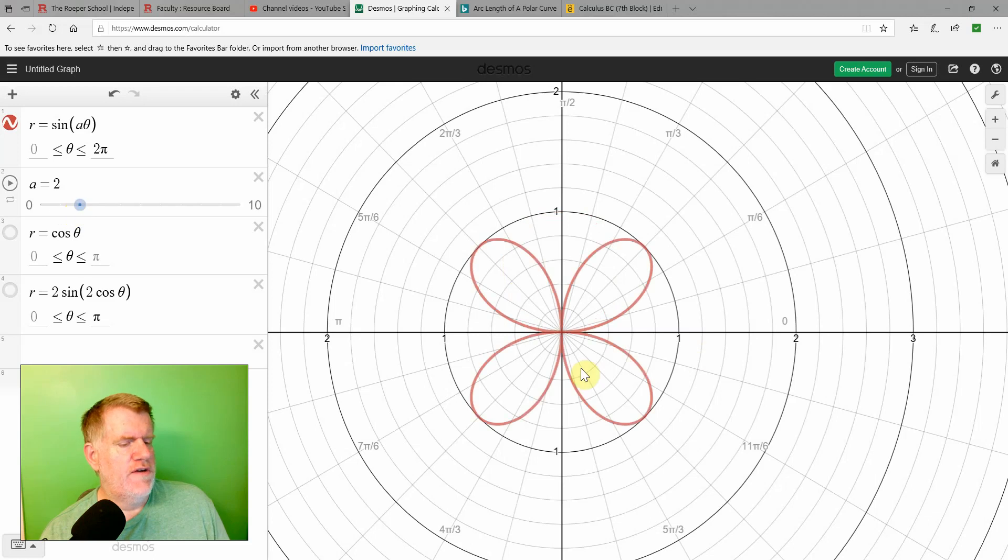When a is two, we've got four petals. It goes out to one and comes back to zero. There are four times between zero and two pi that the sine of two theta would equal zero. It would equal zero at zero, pi over two, pi, three pi over two, and two pi.